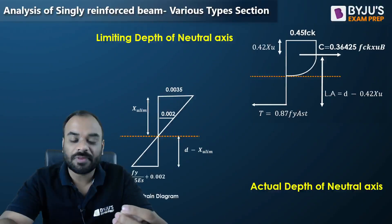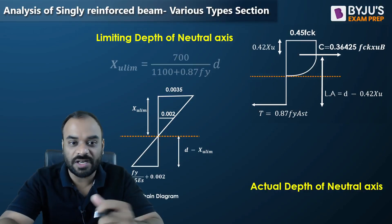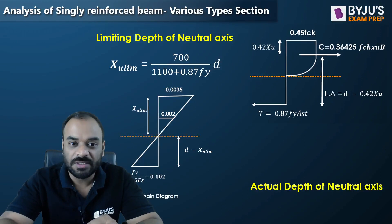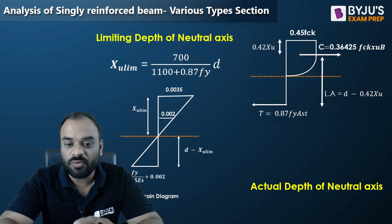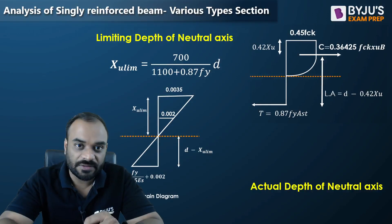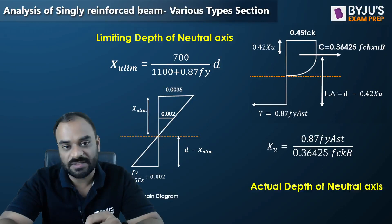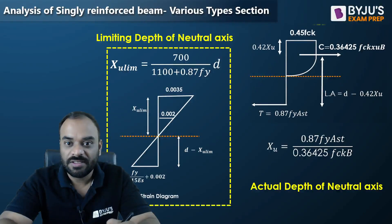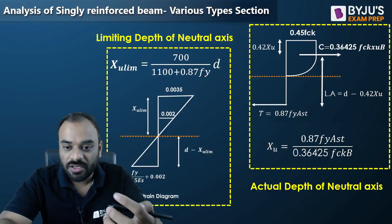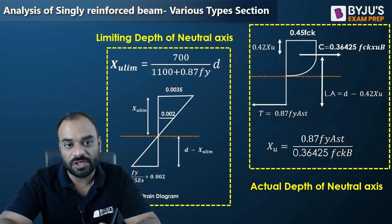In our previous session we discussed how to find out the limiting depth of neutral axis using the strain diagram. The limiting depth of neutral axis is calculated from the strain diagram. The actual depth of neutral axis is calculated on the basis of the stress diagram. This is our strain diagram and its analysis, and this is our stress diagram giving the value of actual depth of neutral axis.